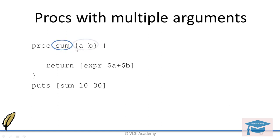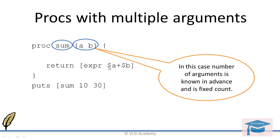This part is again the name of the proc and this part is where you define your arguments. In this case, the number of arguments is known in advance and is a fixed count — though it could be variable, which we will see later. This part is the returning part, so whatever value you are returning from the proc is given here. For example, A will take value 10, B will take value 30, it will calculate the expression, and this function will return 40, so the output will be 40.